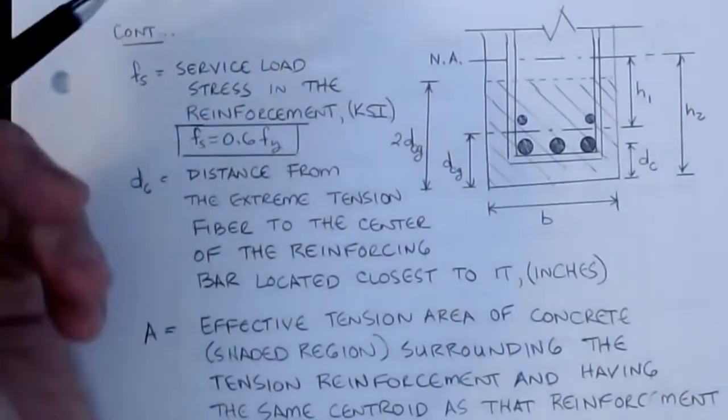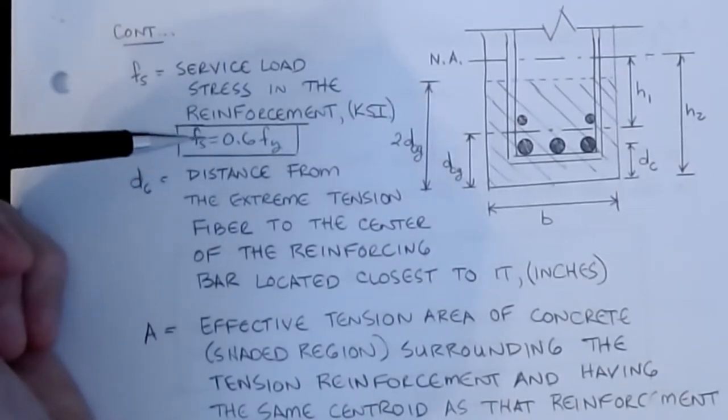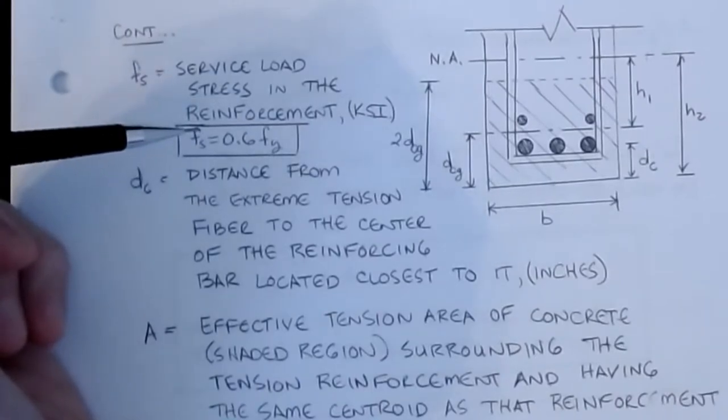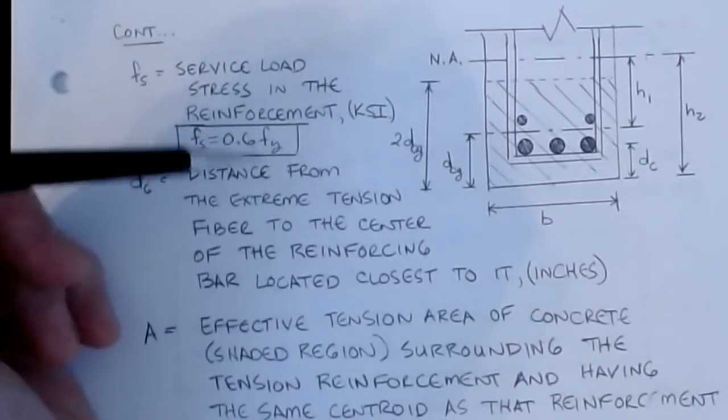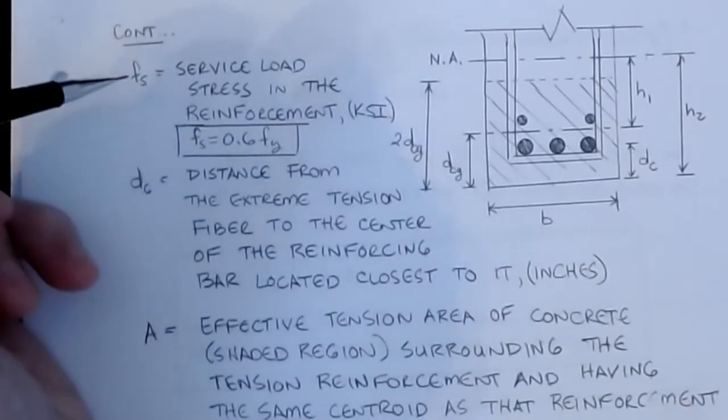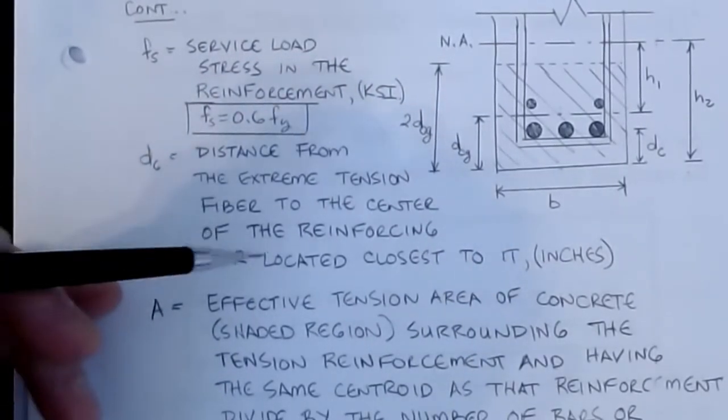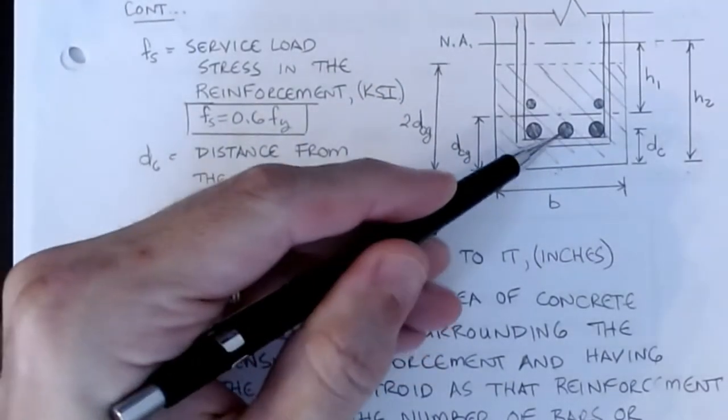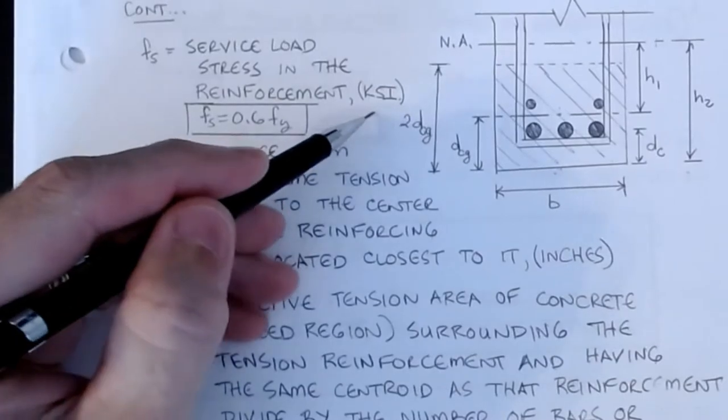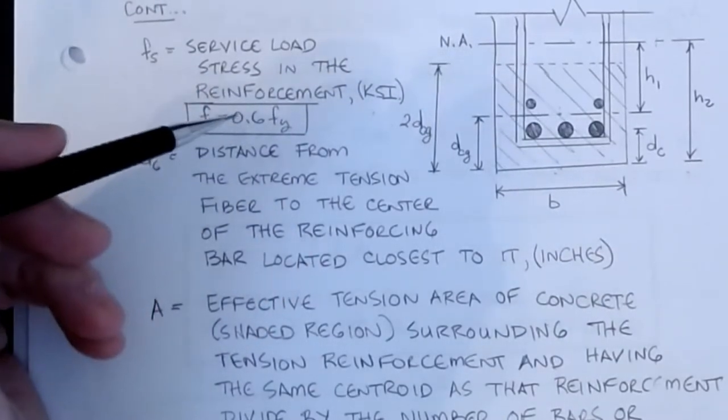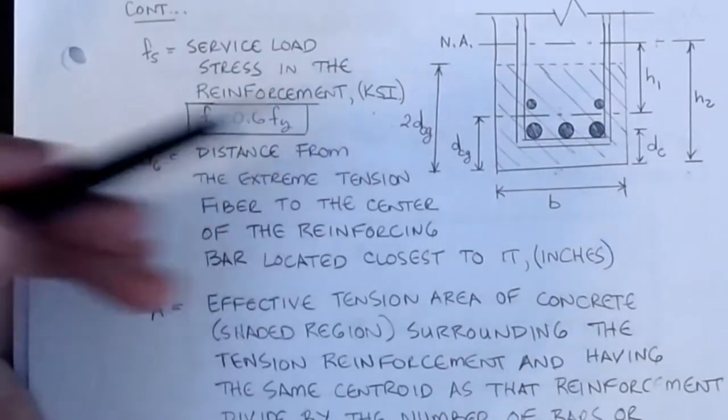The other equations that you saw, we can define Fs, this is the service load stress in the reinforcement, so these are all serviceability calculations, it's not an ultimate calculation, we're not using factored loads. We're going back and almost like what we did with the elastic stress analysis in flexure, we're coming back and we're calculating Fs, and we're going to assume that Fs has taken as 60% of the yield stress. The DC parameter we've described, that's the distance from the extreme tension fiber to the center of the reinforcing bar located closest to it, and that's measured in inches.